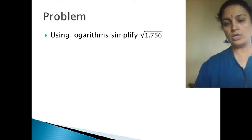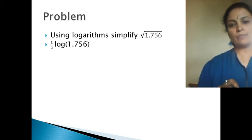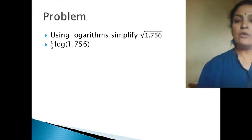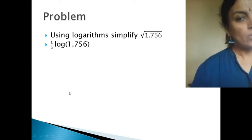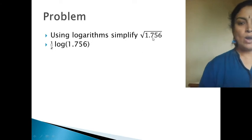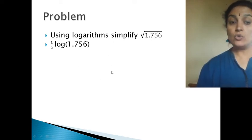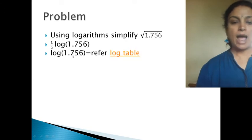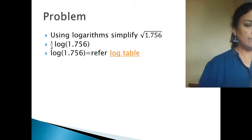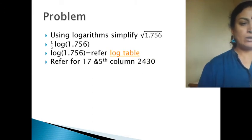Now let us go to another problem — using logarithm, simplify: square root of 1.756. How to do it? Square root means power of 1/2. Therefore, log of √1.756 = (1/2) × log 1.756. For log 1.756: 1 before the decimal point means the characteristic is 0 — so it becomes 0-point.